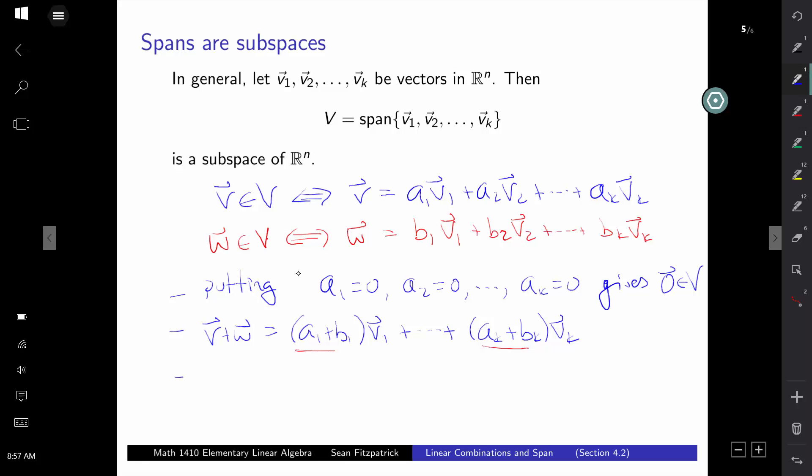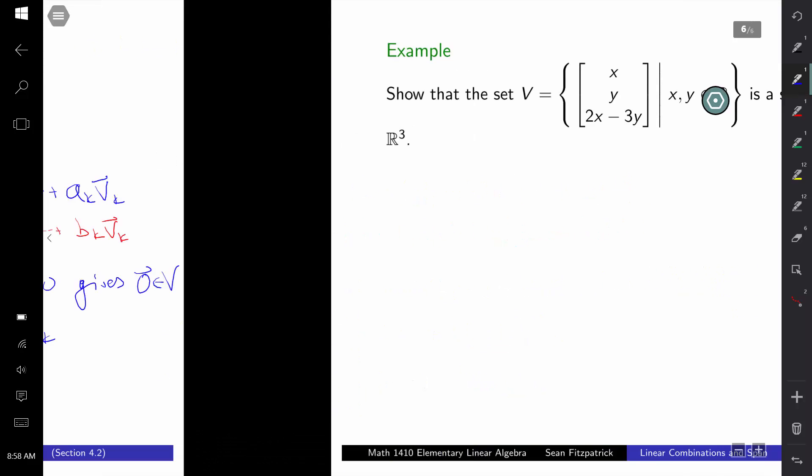And if I were doing, say, c times V for some scalar c, if I simplify that, I'm going to get c*a1*V1 down to c*ak*Vk. And again, that's of the desired form. And so this tells you that your set V contains the zero vector, so it's non-empty. It's closed under addition. It's closed under scalar multiplication. And so you know that it has to be a subspace.